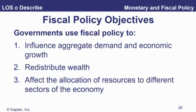All right, next up: the objectives. What are we trying to do? The big one, as we've talked about, is to influence aggregate demand and economic growth — that's what the Keynesian school is talking about. Redistributing wealth, obviously, via government spending and taxation, and affecting the allocation of resources to different sectors of the economy. They can do that with their government spending, where they allocate it, and tax breaks or penalties in various different sectors.